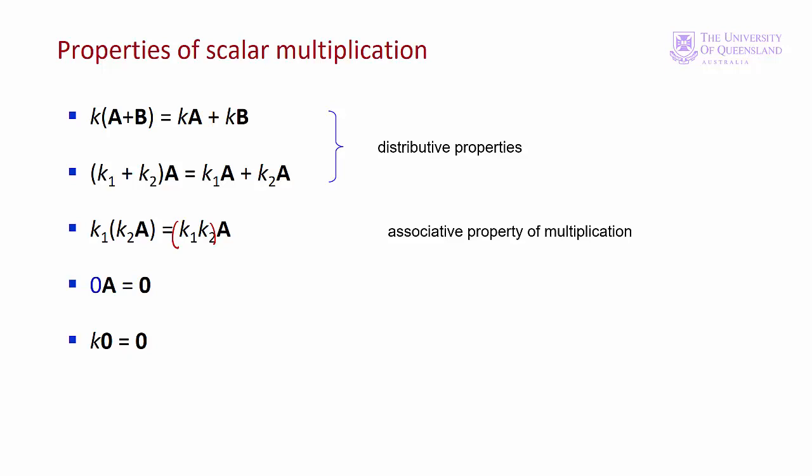And the next rule is 0 is a scalar. That just means if we multiply any matrix by the scalar 0, we end up with a null matrix. And finally, if we multiply a null matrix by K, we end up with a null matrix.